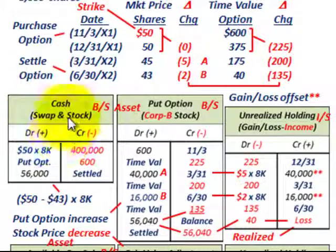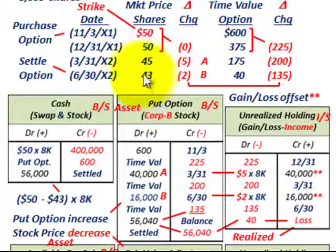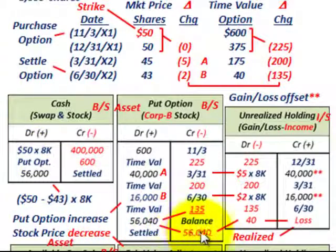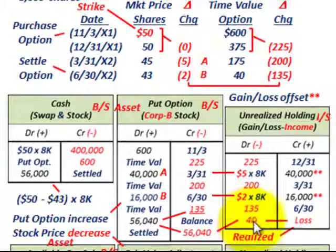At the settlement date, the market price is $43 per share and the strike price is $50 per share. We receive $50 per share — sell at $50, buy at $43 — a net change of $7 per share times 8,000 shares equals $56,000 cash received. So we debit cash for $56,000 and credit the put option account for $56,040. The balancing amount is a realized holding loss of $40.